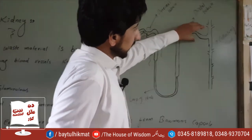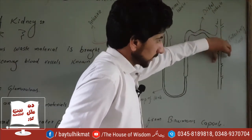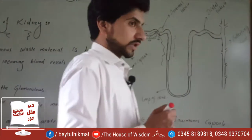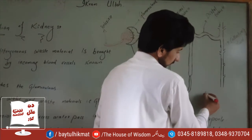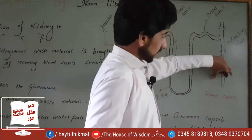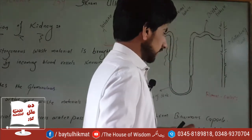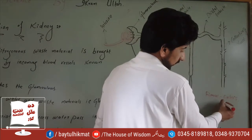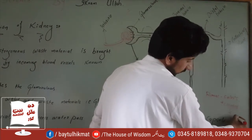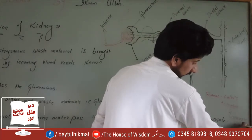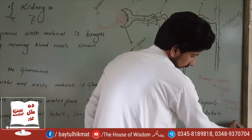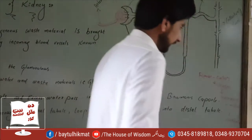The waste material becomes urine. These are the urine collecting ducts. The renal pelvis collects this material. From the collecting ducts it passes to the renal pelvis, then via the ureter, and then to the urinary bladder.